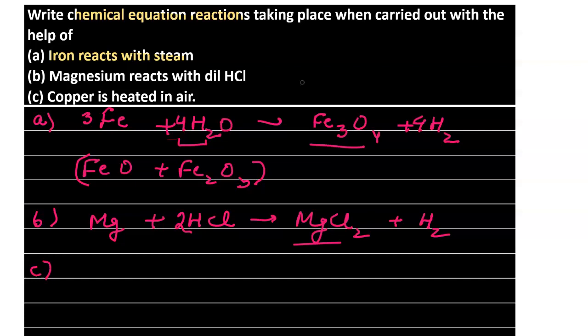The third case is when copper is heated in air. Copper reacts with the oxygen in air and forms a black compound - copper oxide (CuO). To balance the equation, we place 2 on the copper side and 2 on the oxygen side. This is how the balanced equation for copper heated in air is obtained.